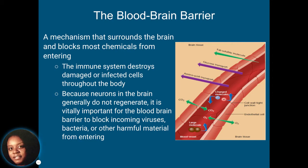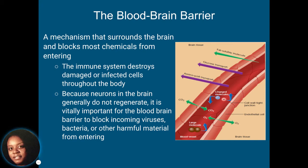Another very important structure is the blood-brain barrier. This is the part of the brain responsible for blocking harmful chemicals from entering your bloodstream. Because neurons in the brain that have been destroyed cannot regenerate, it's important for the blood-brain barrier to block out any type of infection, viruses, bacteria, or other harmful material from entering your bloodstream in order to keep you healthy.